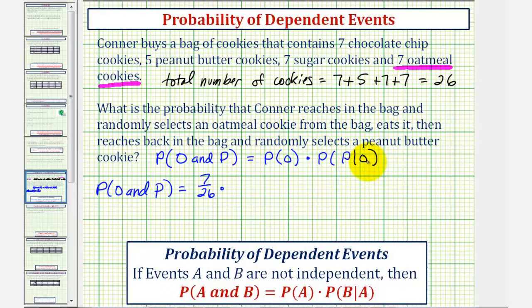Since Connor has already selected one cookie, there's no longer 26 cookies, there's now only 25, so the total number of outcomes would now be 25. Of those 25 cookies, notice five of them are peanut butter cookies. So the probability of selecting a peanut butter cookie given an oatmeal cookie has already been selected would be 5/25.